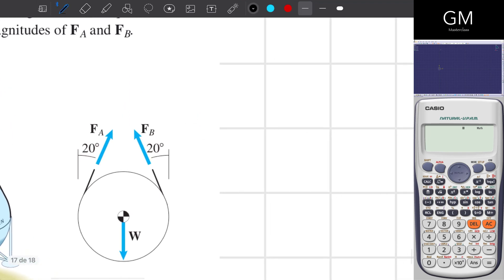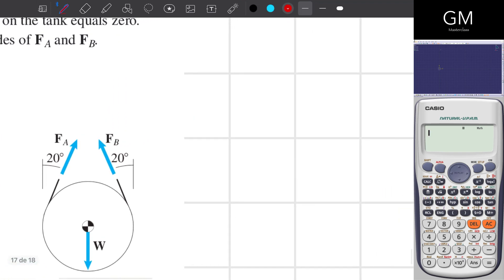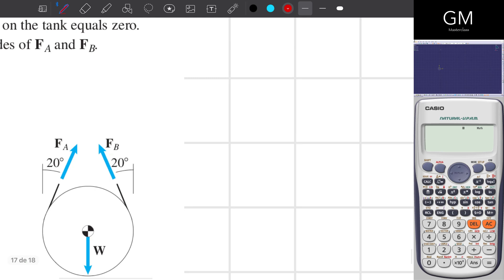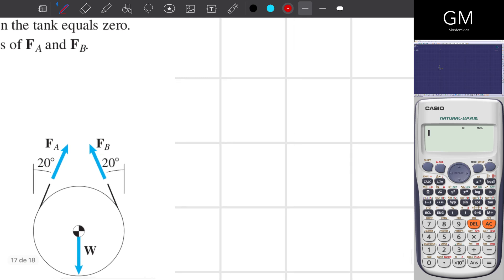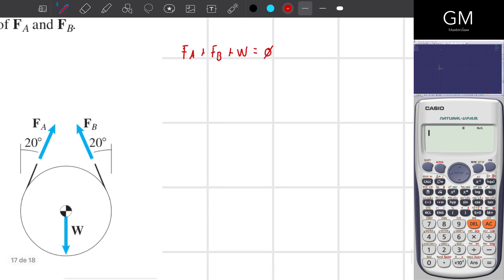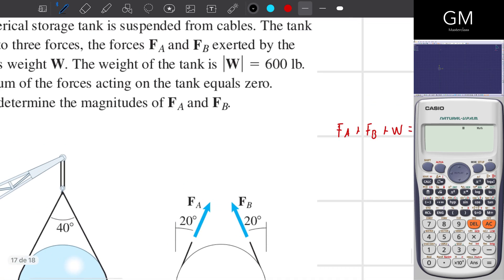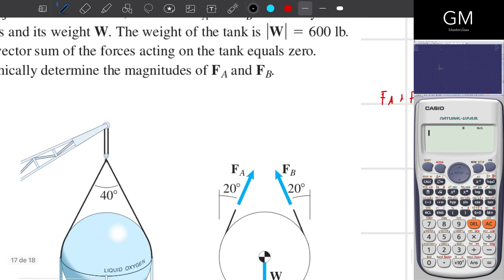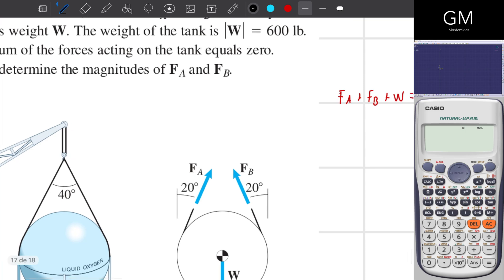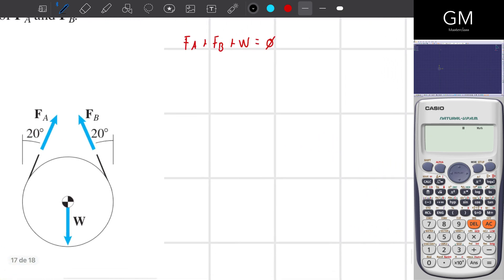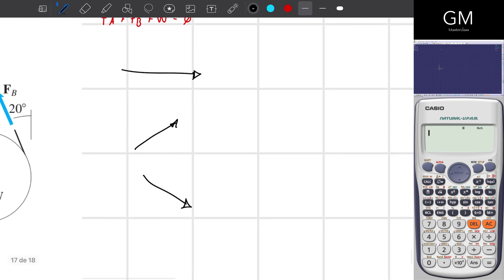One of the statements, I think that is one of the principal ones, tells me that F_A plus F_B plus W equals zero. What does it mean? Well, when I want to create a graphical sum of vectors, all I have to do is this, for example, using these three vectors.